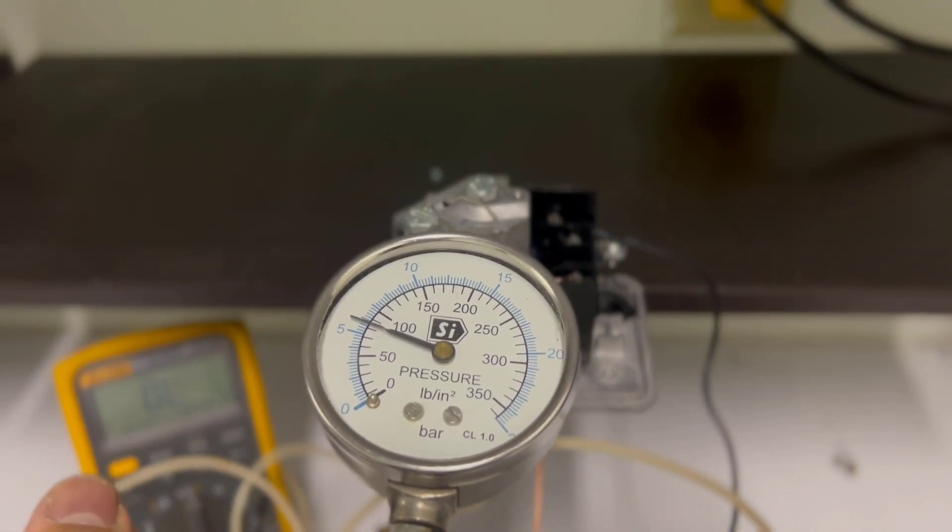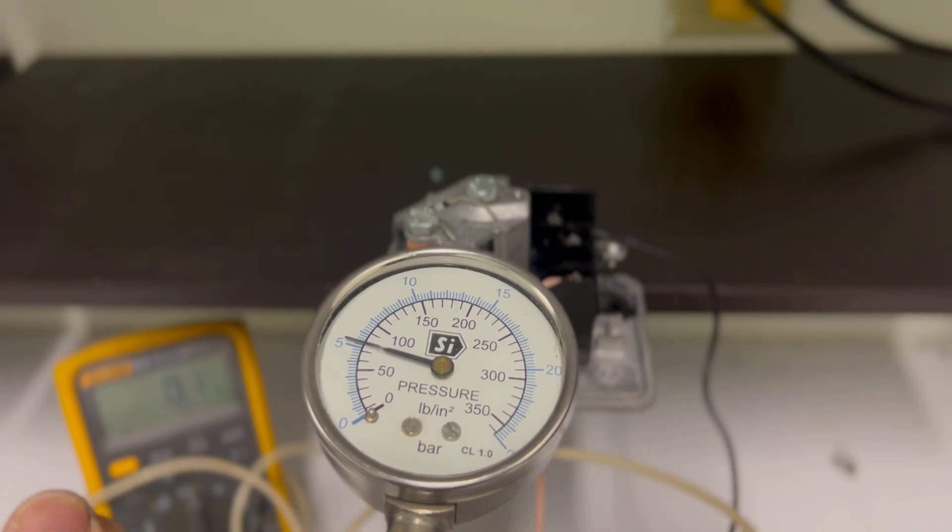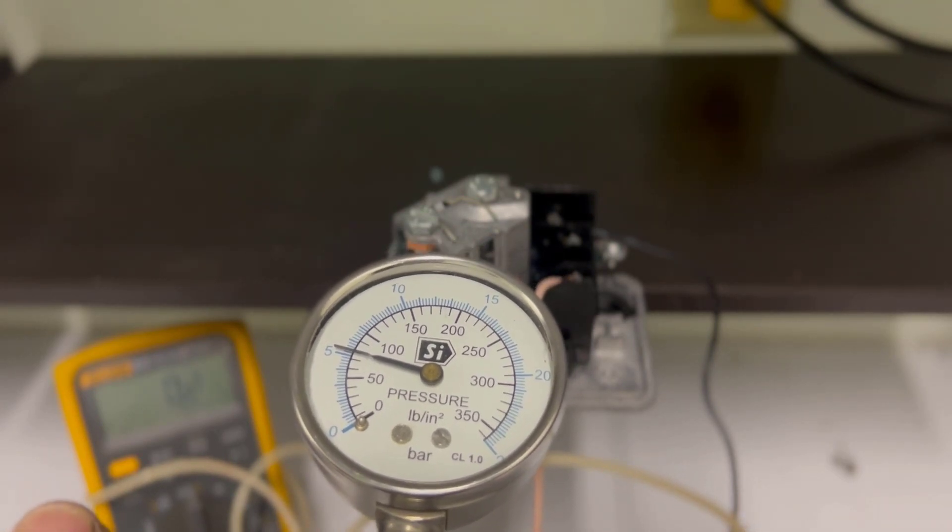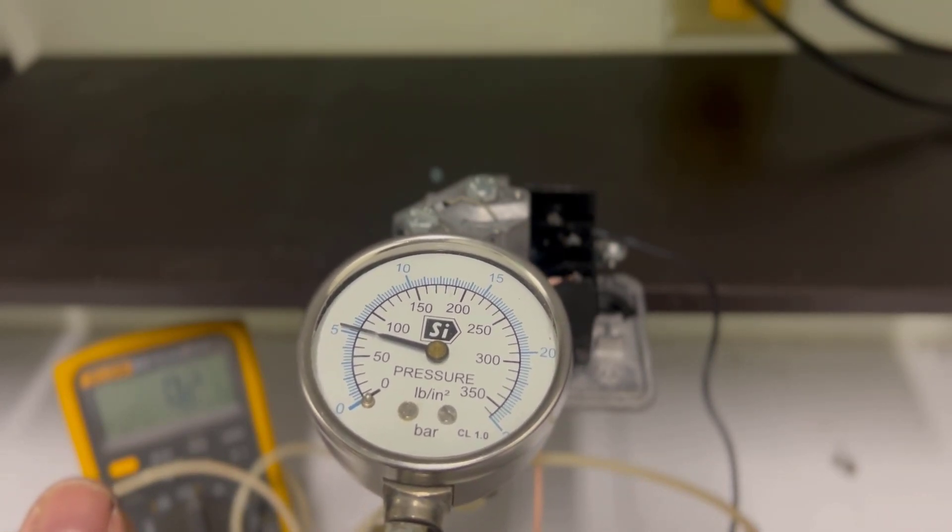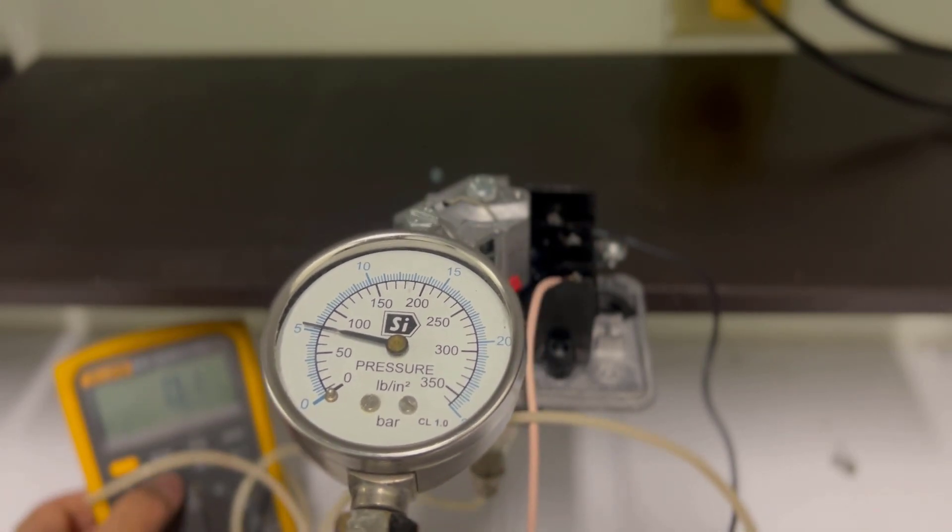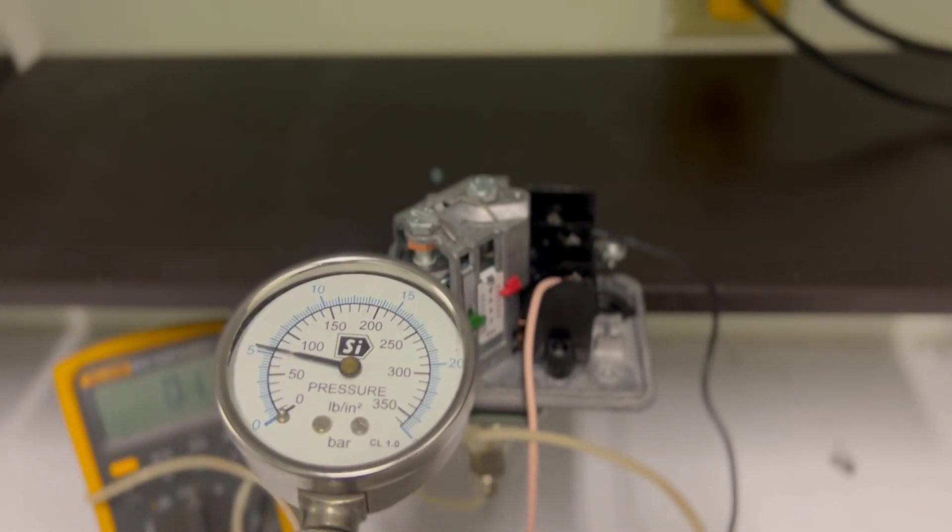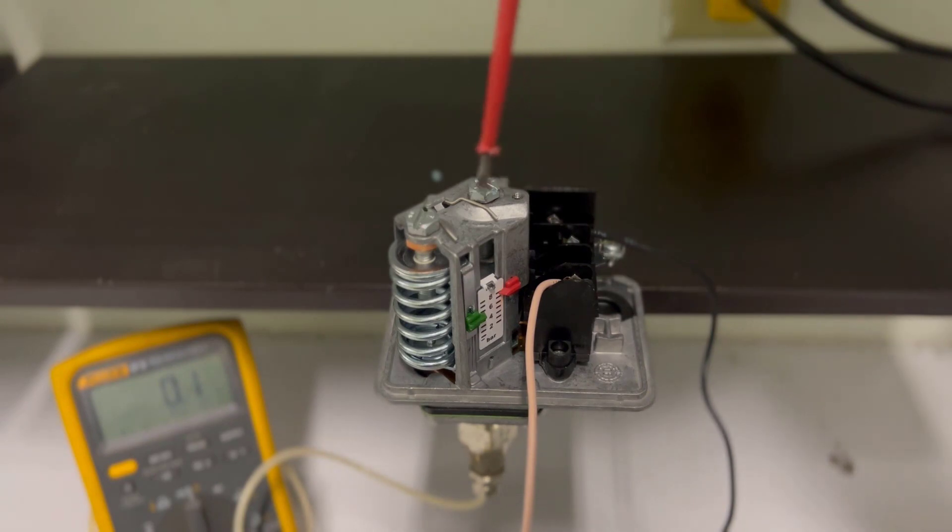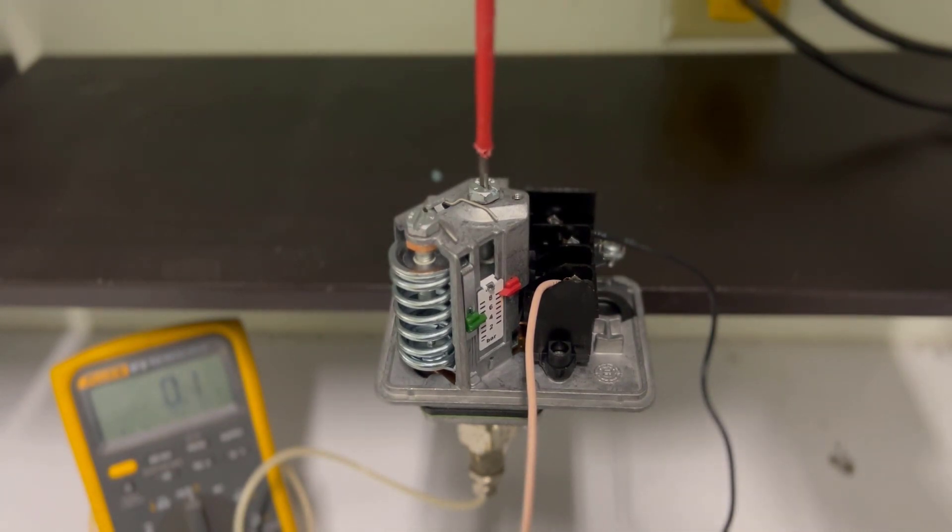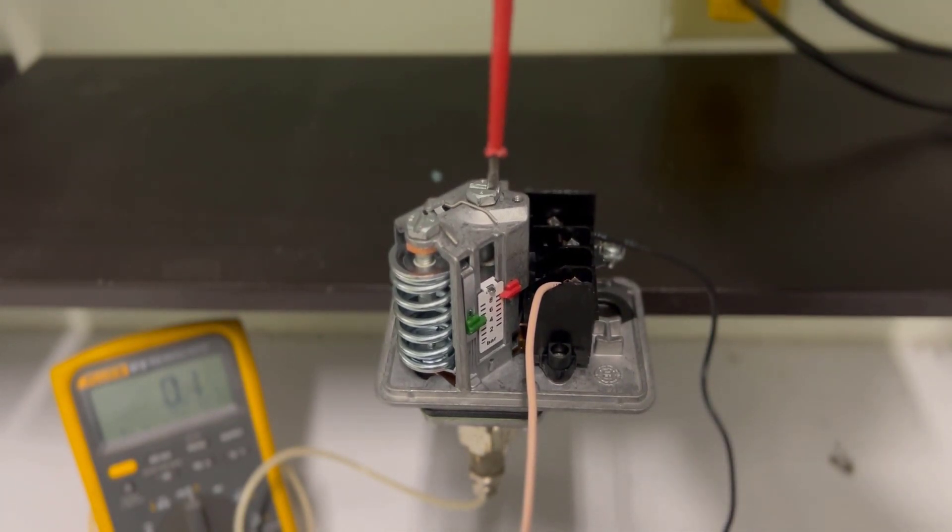As you can see, we have 110 psi for the cut-out pressure and 80 psi for the cut-in pressure. So, we need a little more adjustment to get a 120 psi cut-out and 90 psi cut-in pressure.